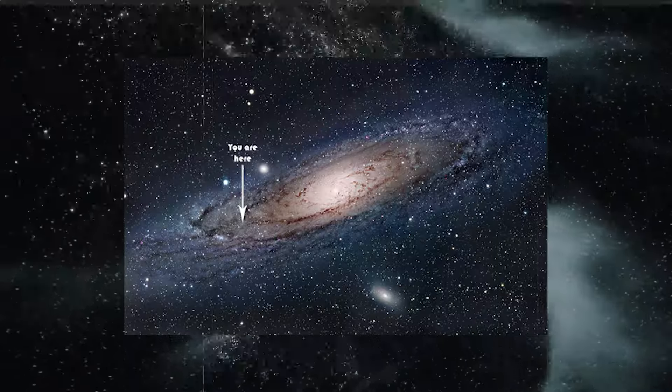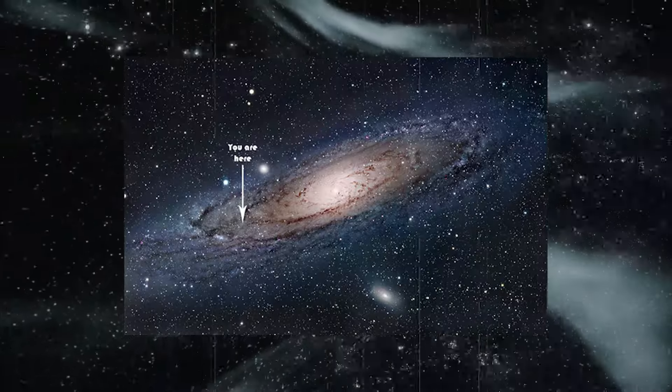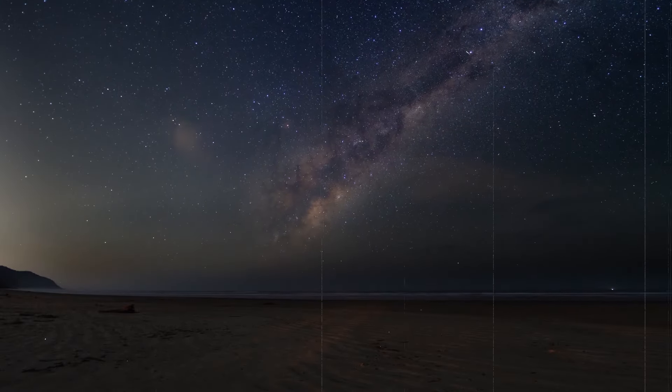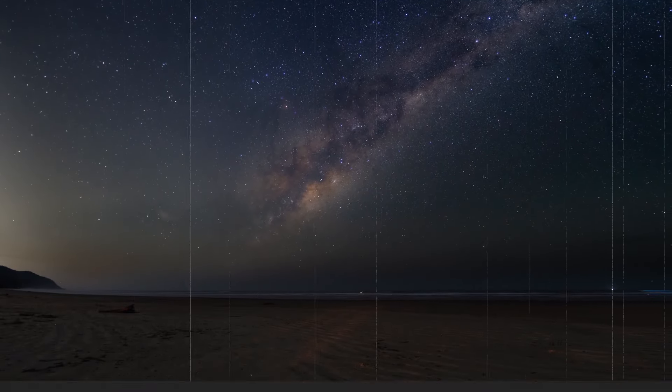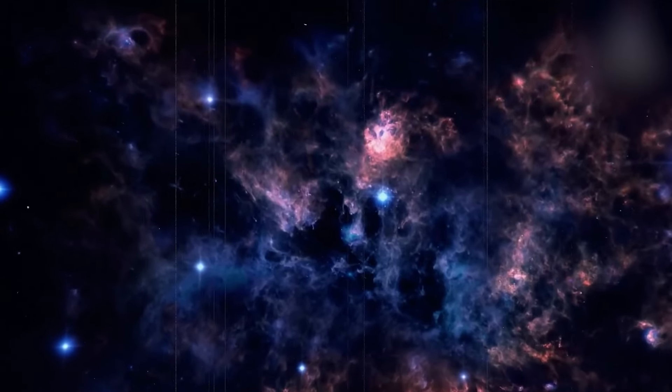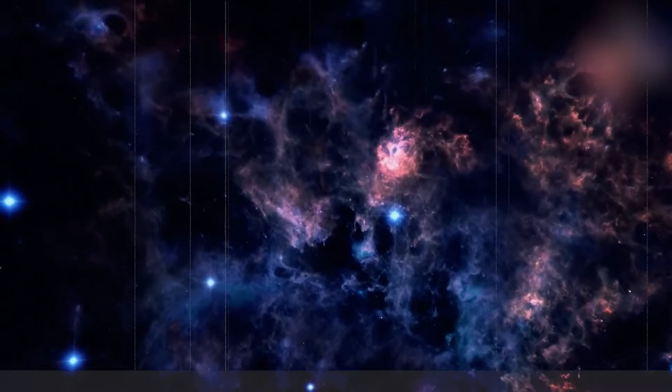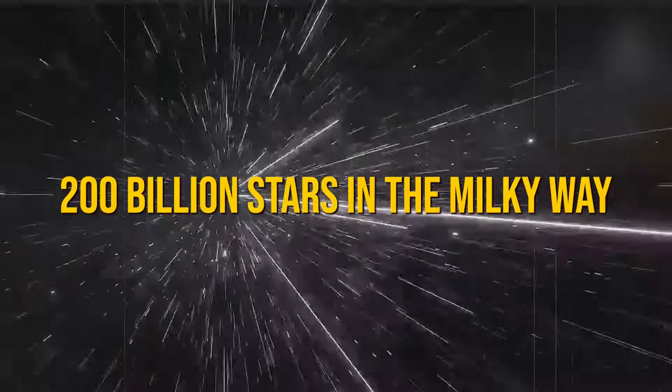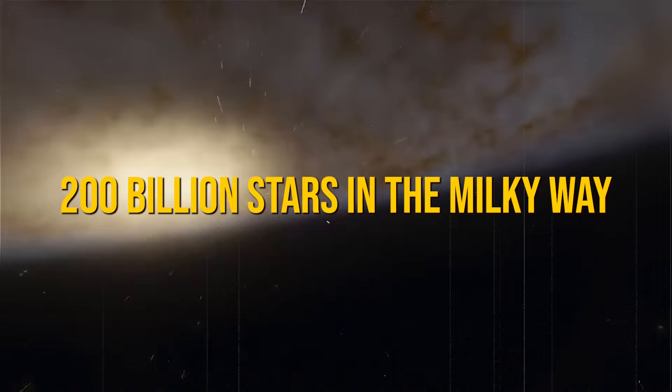In the big picture, Earth is just a tiny dot in the vast universe. Our home galaxy, the Milky Way, seems endless when we look up at the night sky. But in reality, it's just one speck in the huge cosmic sea. Our sun might feel special to us, but it's just one of over 200 billion stars in the Milky Way.